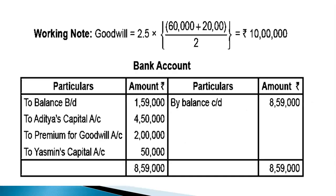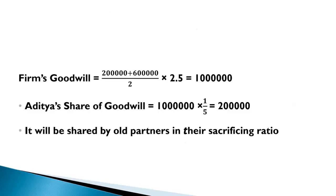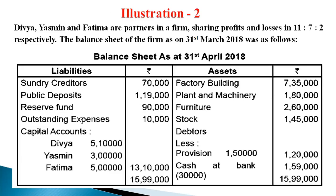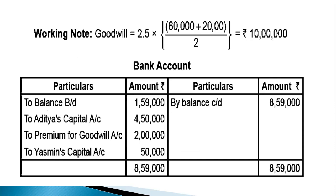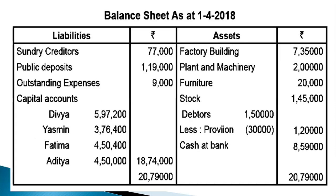For bank account: opening balance 1,59,000. Aditya brought capital 4,50,000 and premium for goodwill 2,00,000. Yasmin brought fresh capital 50,000. Total bank balance = 8,59,000, shown on asset side of new balance sheet. New balance sheet: sundry creditors 77,000 (70,000 plus 7,000), public deposit as is, outstanding expenses 9,000, all four partners capitals, and all assets updated for adjustments.